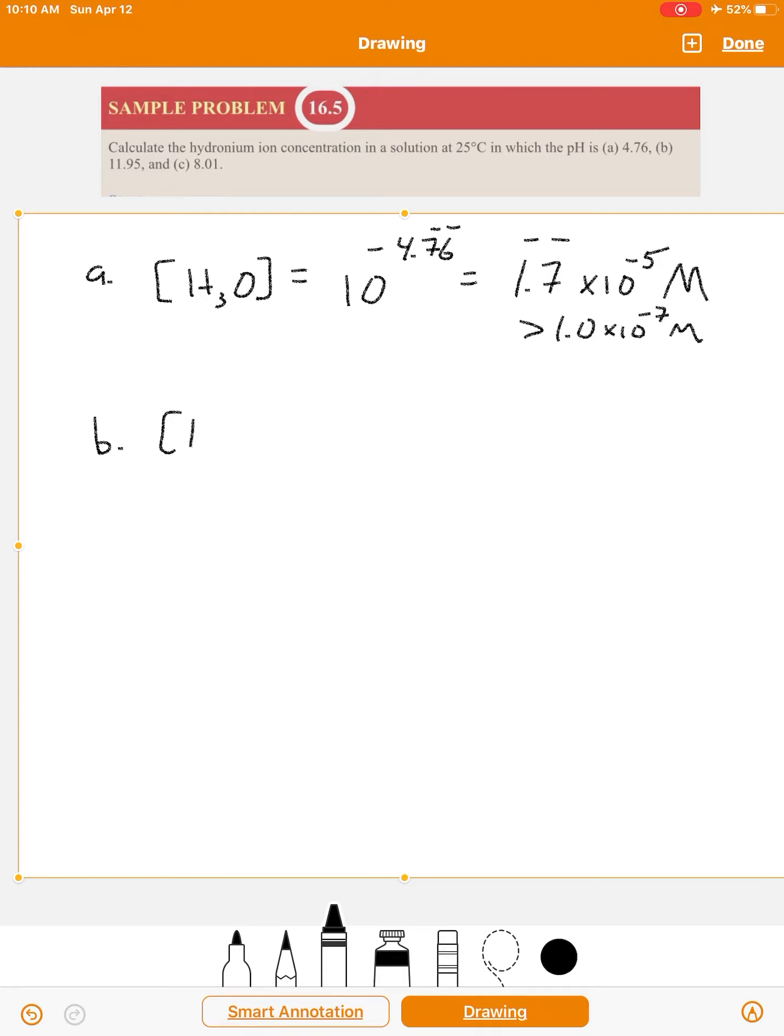Let's try B. The concentration of hydronium—oops, I forgot to put my plus sign there—H3O plus equals 10 to the negative 11.95. That's basic, right, because the pH is greater than 7. So you're going to get a pretty small number here. This works out to 1.1 times 10 to the minus 12 molar, two sig figs. That's definitely basic. pH is greater than 7, or the hydronium ion concentration is less than 10 to the minus 7.